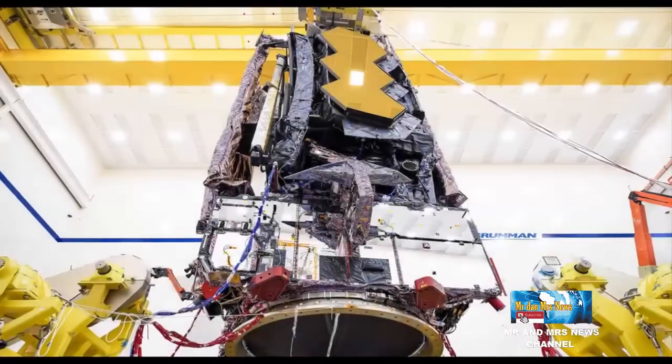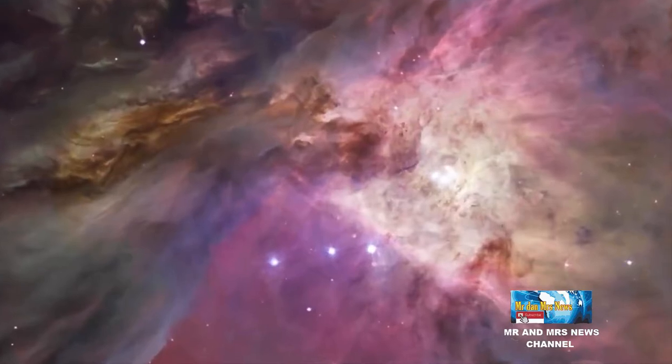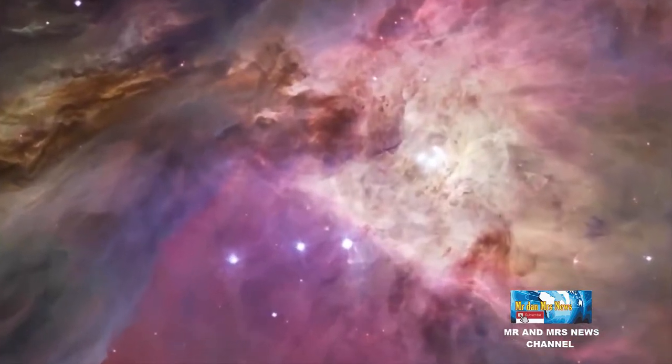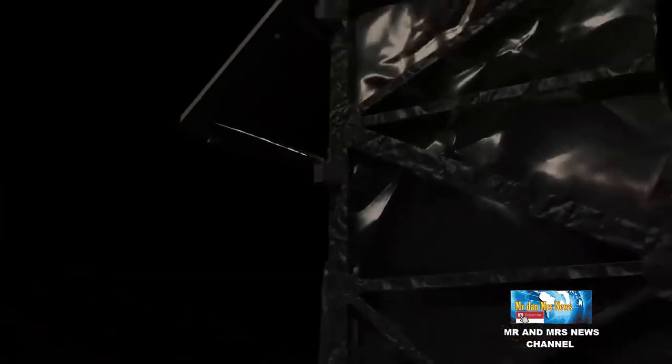Hubble berada di orbit rendah bumi, sementara teleskop ini akan berada di antara matahari dan bumi yang berjarak sekitar 1 juta mil jika kita menggambar dari garis lurus dari matahari ke bumi.